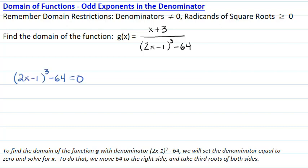To do that, we will move the 64 to the right side and we will take third roots of both sides.